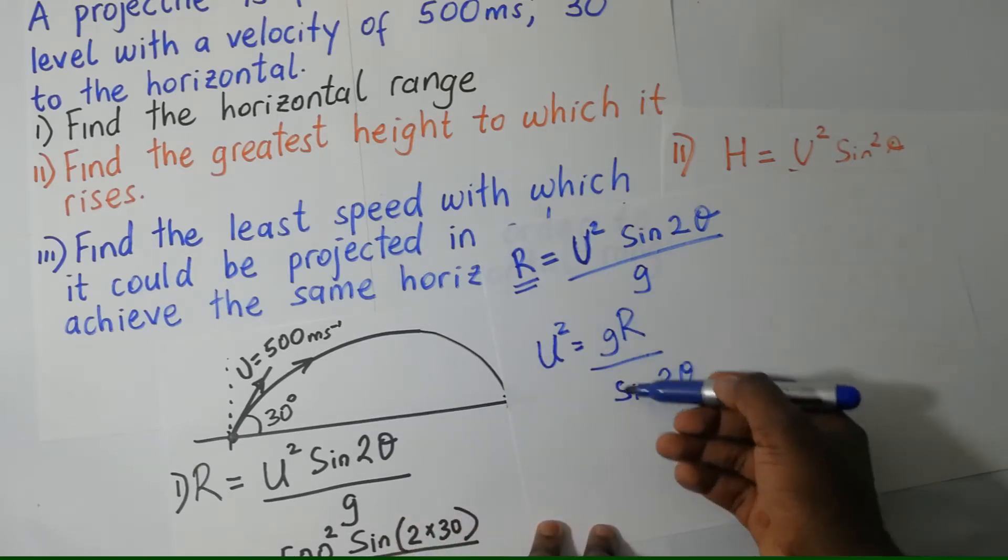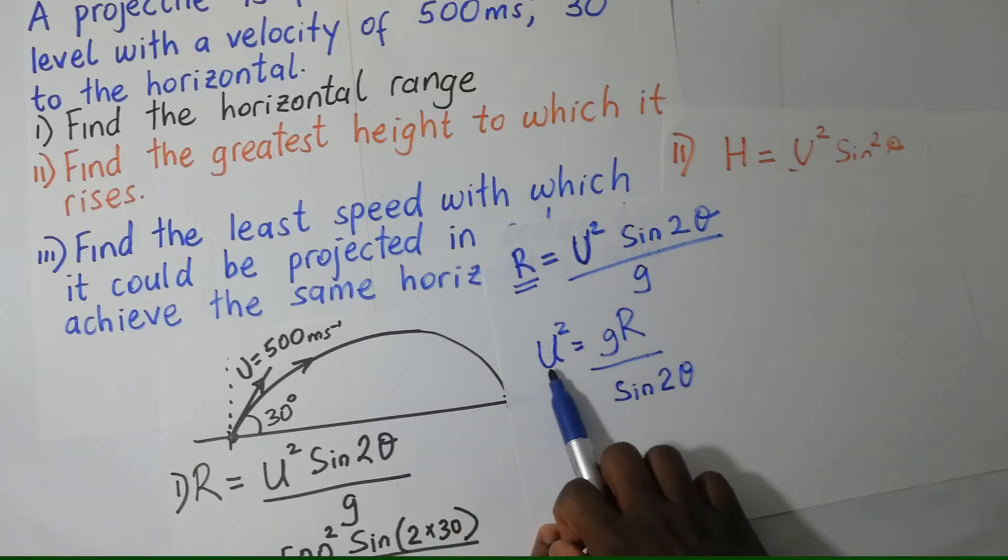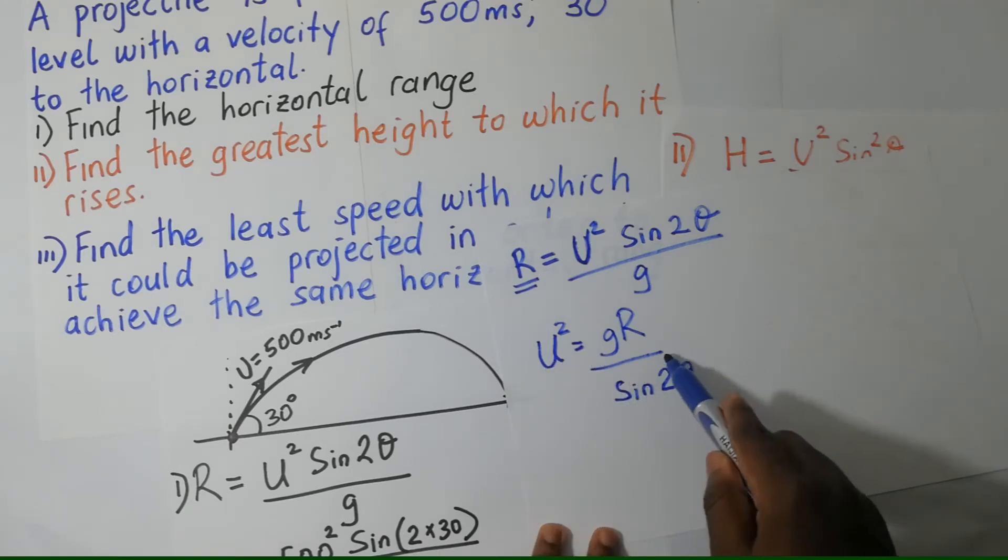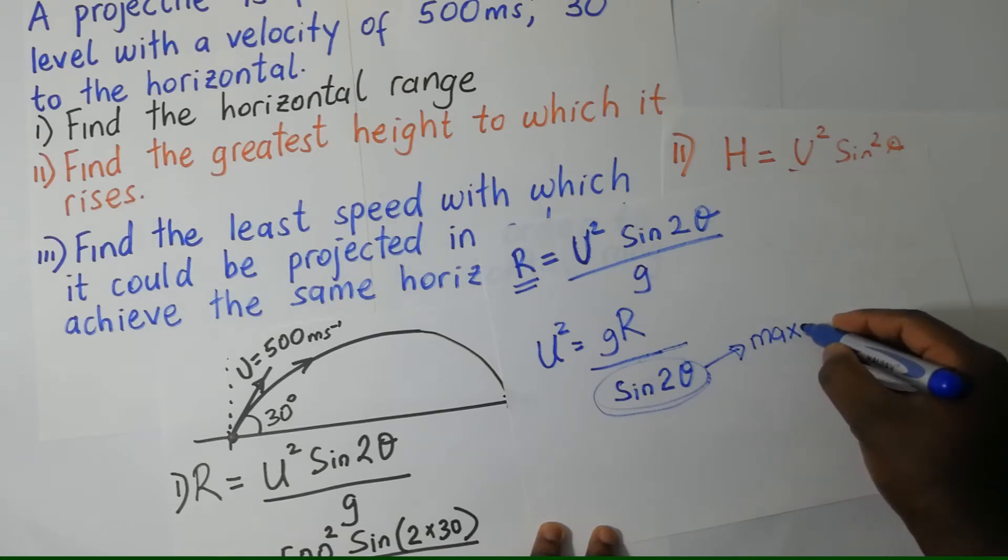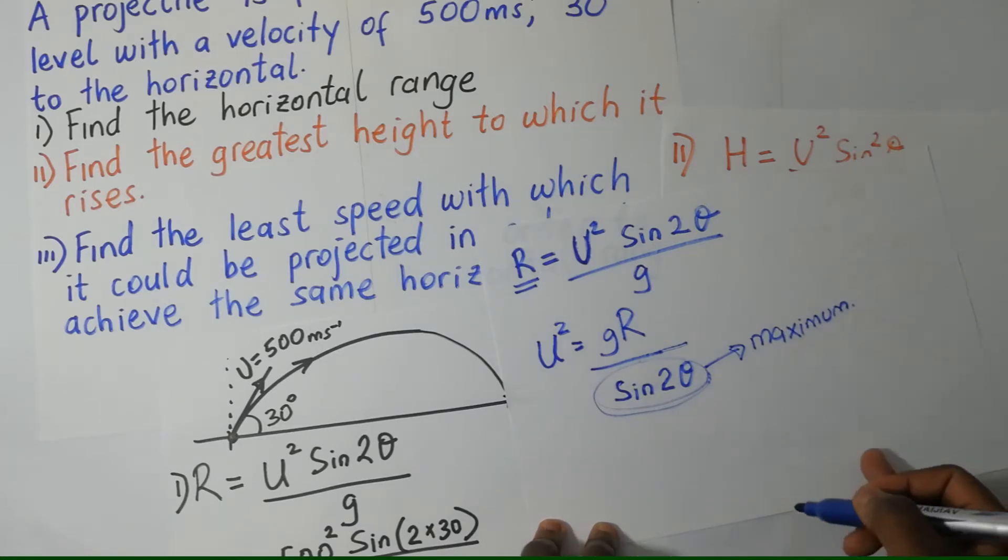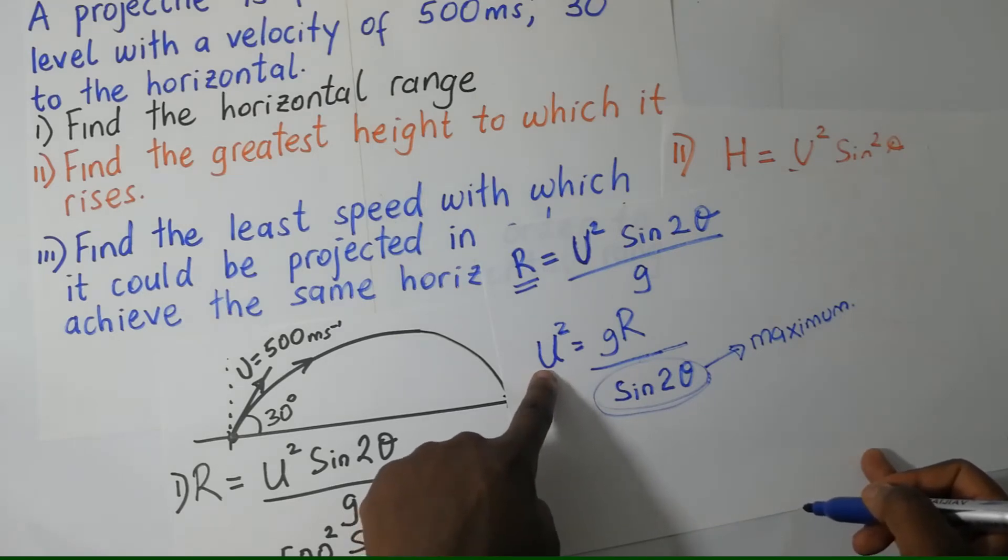When you look at this expression, for me to be able to get the least value of U, it means that my denominator has to be a maximum figure. This must be at its very maximum.